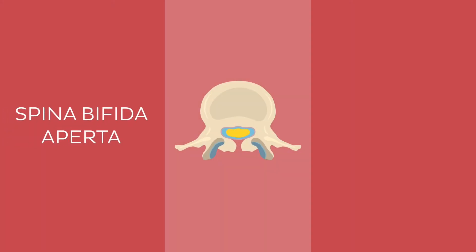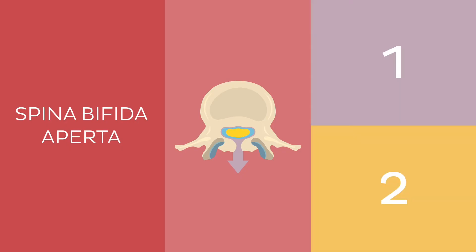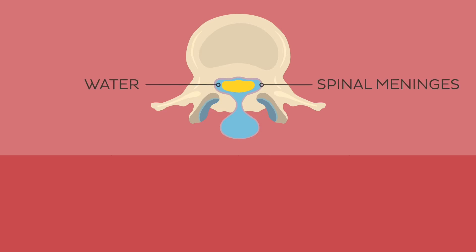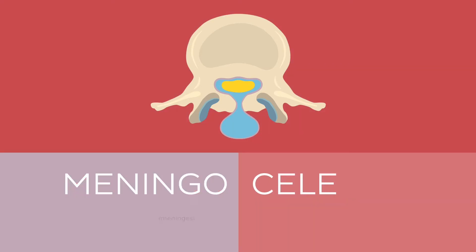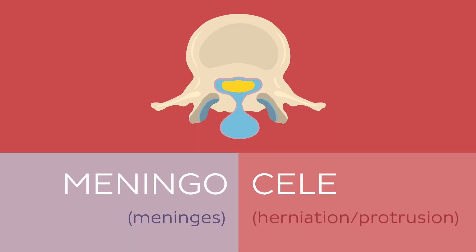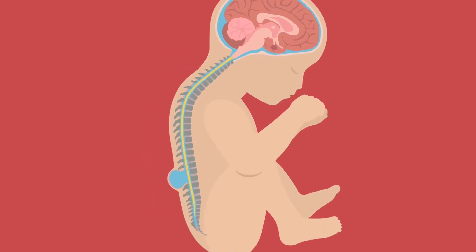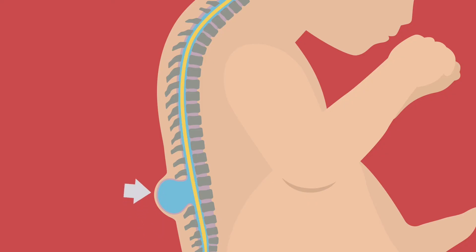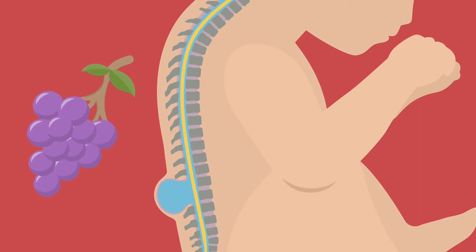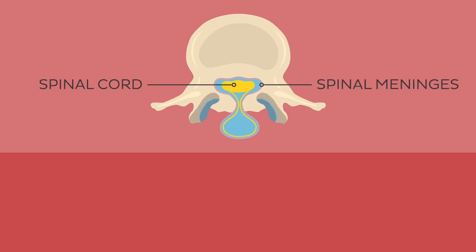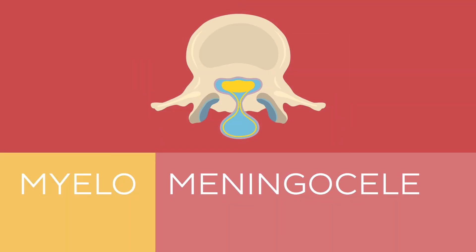Spina bifida aperta is a more difficult and much more prevalent type. Depending on which structures protrude through the bony defect, there are two main types. If only the spinal meninges protrude through the opening, it is called a meningocele — meningo referring to the meninges and cele referring to herniation or protrusion. Meningocele can occur at any site along the spine or back of the skull. They look like a sack filled with fluid, usually covered by a very thin layer of skin, and can range in size from a grape to an orange. If both the meninges and a part of the spinal cord protrude, this is called a myelomeningocele — the word myelo being a Greek word referring to the spinal cord.